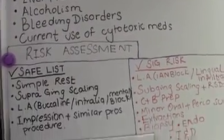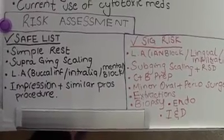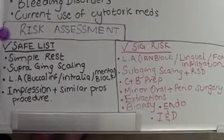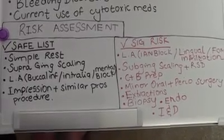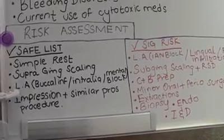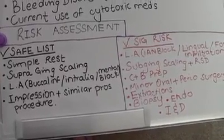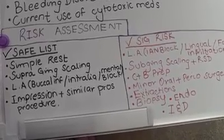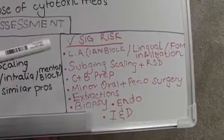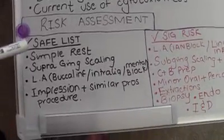There are certain procedures we can do in any patient, even if they are on warfarin or any other medication that affects bleeding, or if they have liver or renal disease. For other procedures, we have to take into account the disease or medication the patient is taking. There's a safe list — procedures we can perform without further consultation from the patient's clinician, GP, or specialist. Then there's a significant risk list, which tells you which procedures may cause excessive bleeding.